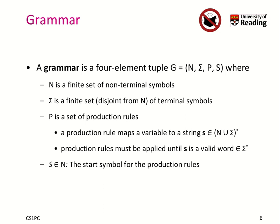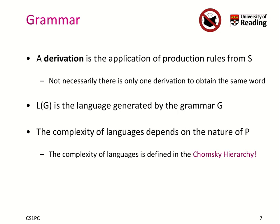You start with the start symbol and then apply production rules until you get a valid word consisting only of terminal symbols — similar to EBNF. A derivation is the application of production rules from the start symbol. There can be many different derivations to obtain the same word, and we denote L(G) as the language generated by grammar G. The complexity of languages depends on the nature of the production rules.